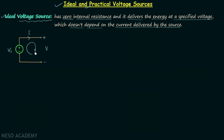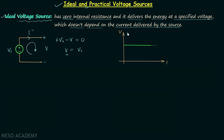Applying KVL in this loop, we get: plus Vs minus V equals zero. From here we can say that the terminal voltage V is equal to Vs. When we plot the relation between V and I — that is, the variation of terminal voltage V with change in current — we can see that V is always equal to Vs for all values of current I.